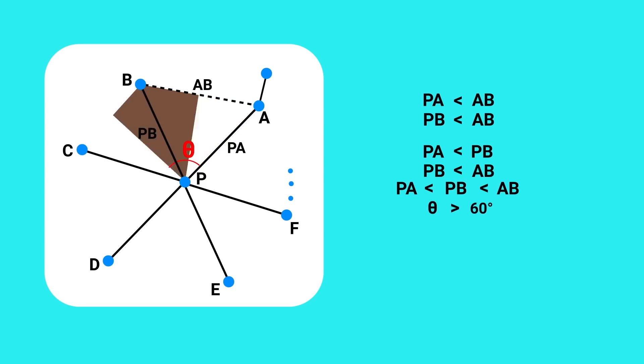But that must be true for all of these angles. Any two edges connecting to P must be separated by at least 60 degrees. And since the sum of all these angles must be 360 degrees, then at most there can be five connections for a single point.